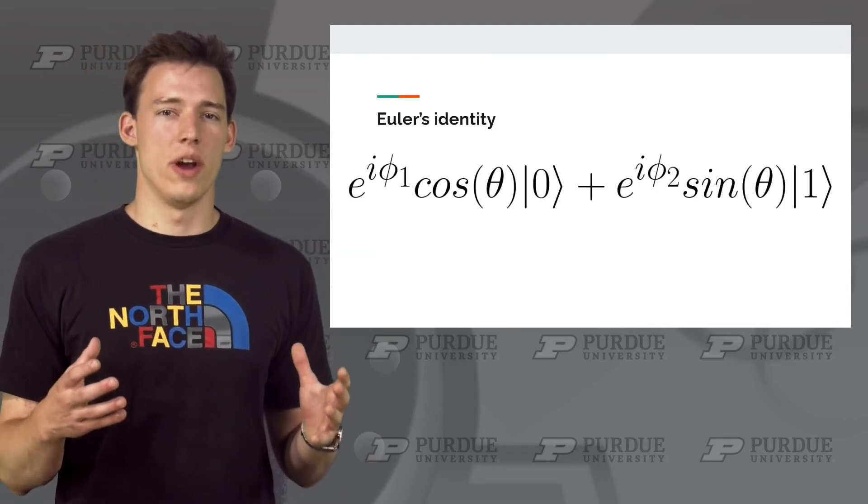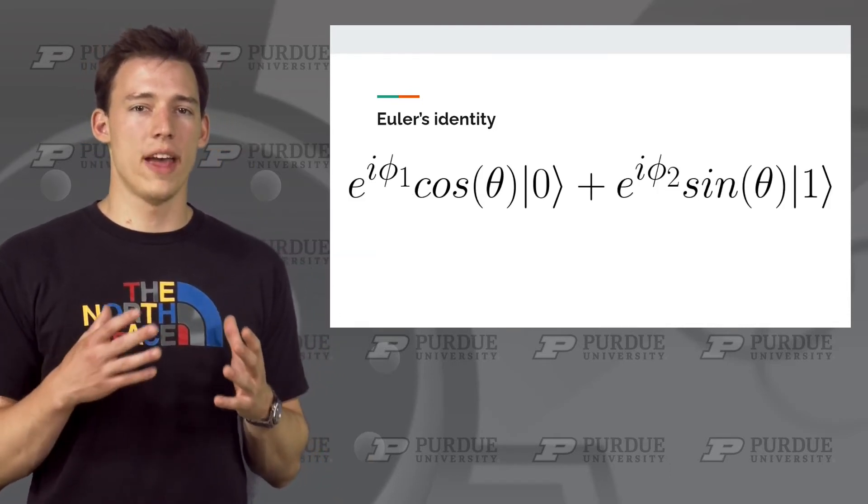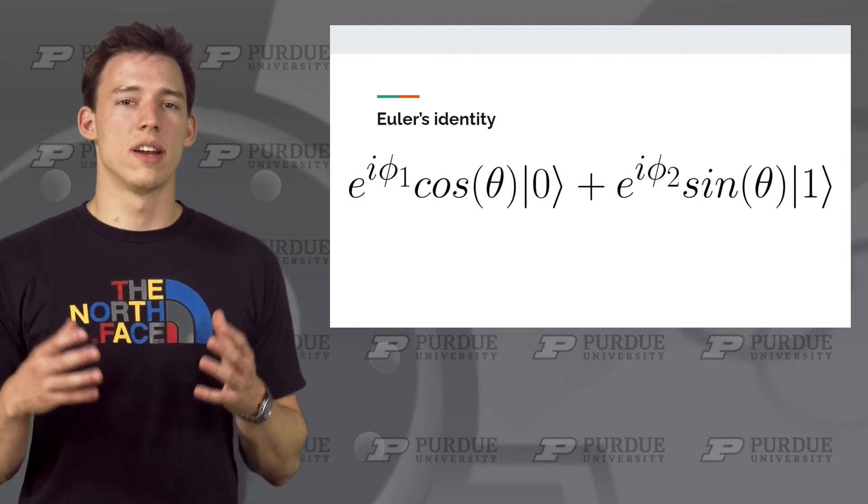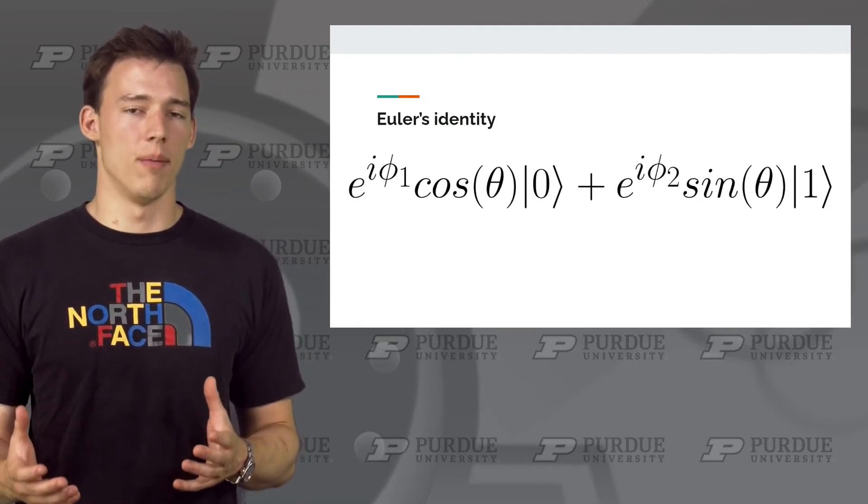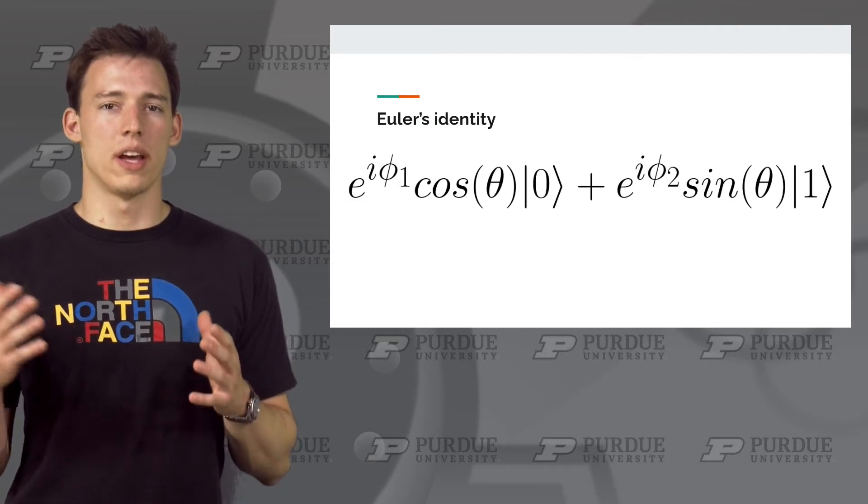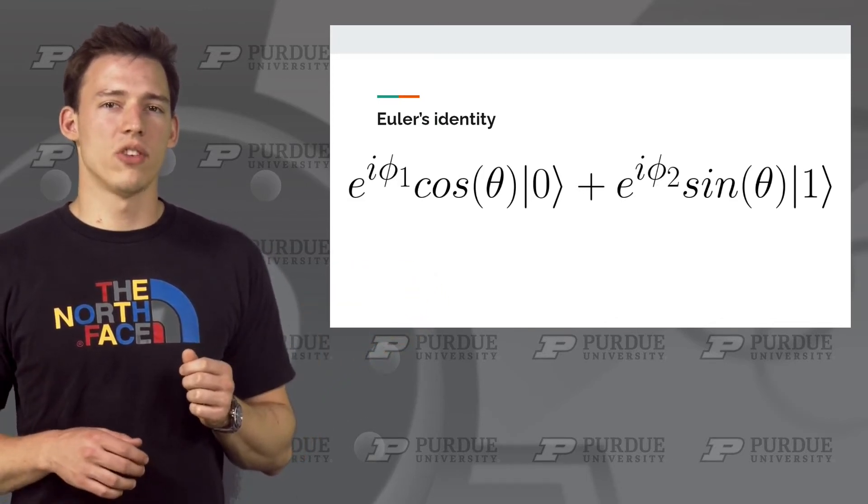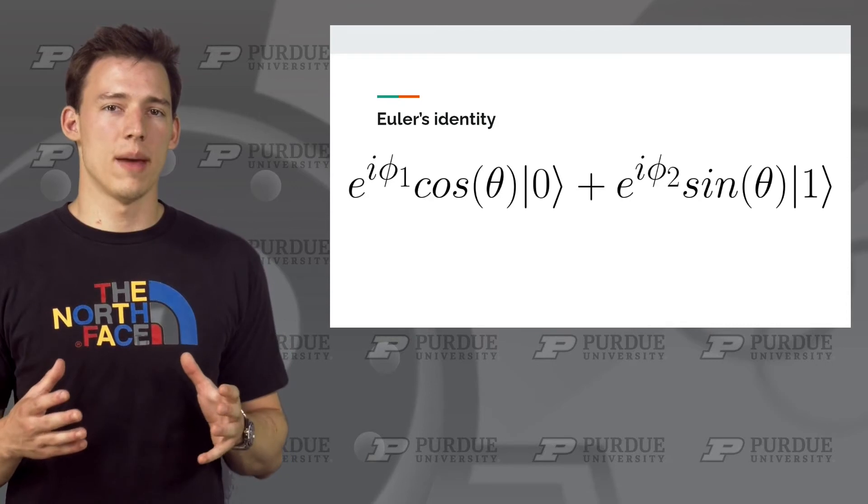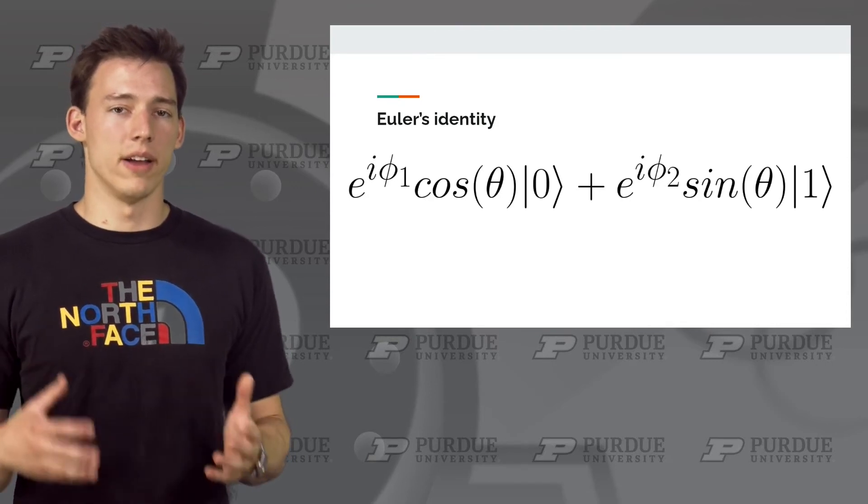We can augment this previous equation to include a description of phase by using Euler's identity to give us a variable that can be negative or even complex. This new state will look like this. Each e to the i phi allows us to tune the phase of the 0 and 1 state amplitude by controlling phi 1 and phi 2.